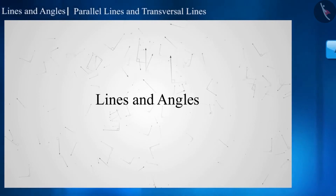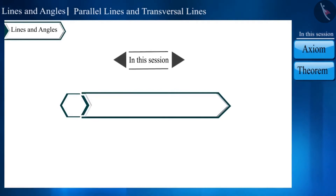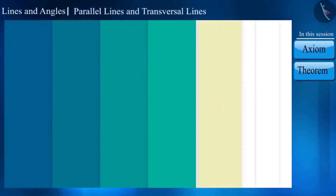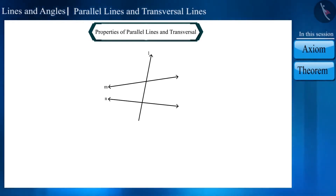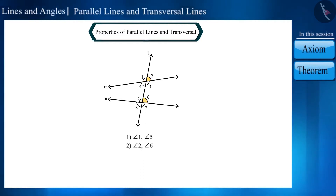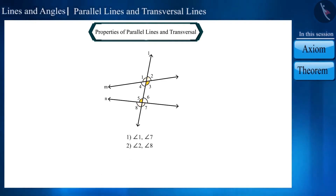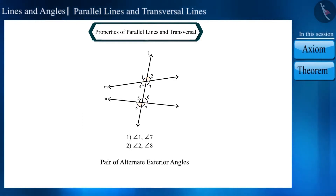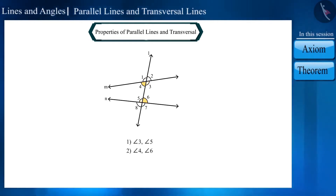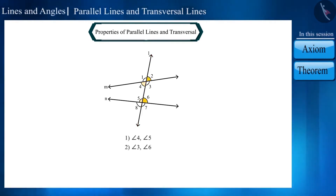Hello friends, welcome to this video on lines and angles. Today we will discuss the properties of parallel lines and transversals. When two lines are intersected by a transversal, different types of angle pairs are formed. These include pairs of corresponding angles, alternate exterior angles, alternate interior angles, and consecutive interior angles — also called allied or co-interior angles.